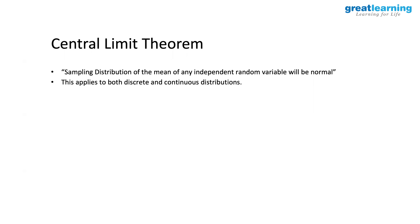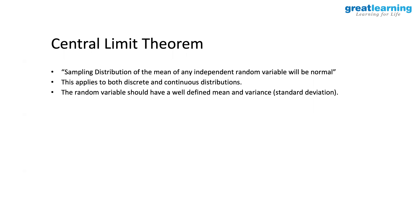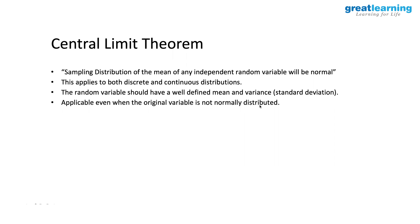This applies to both discrete and continuous distributions. The random variable should have a well-defined mean and variance — where variance is the square of standard deviation. Importantly, the Central Limit Theorem is applicable even when the original variable is not normally distributed; the distribution of the means of that population will still be normally distributed.